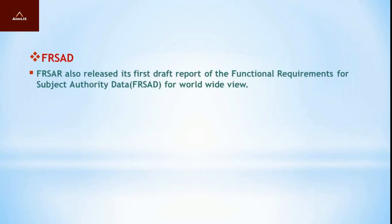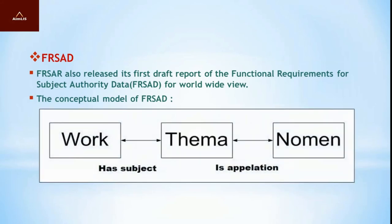FRSAR also released its first draft report of the Functional Requirements for Subject Authority Data (FRSAR) for worldwide review. The conceptual models of FRSAR are Work, Thema, and Nomen. Work is a distinct intellectual or artistic creation. Thema is anything that can be the subject of a work — the abstract idea of the 'aboutness' of a given work, independent of language and discipline. Nomen is any alphanumeric, sound, visual, or other symbol, sign, or combination of symbols by which a thema is known, referred to, or addressed.